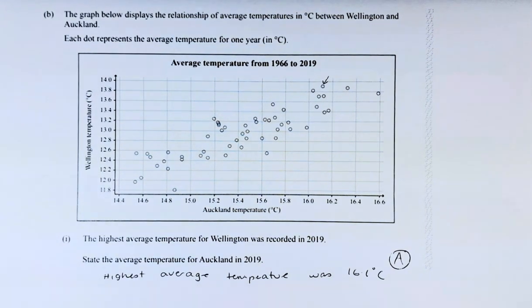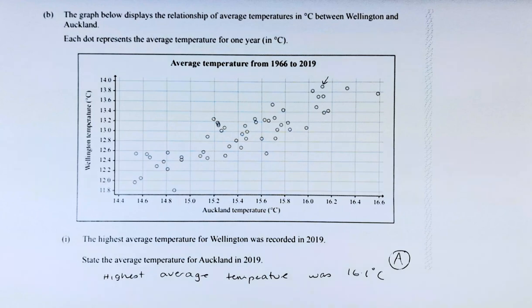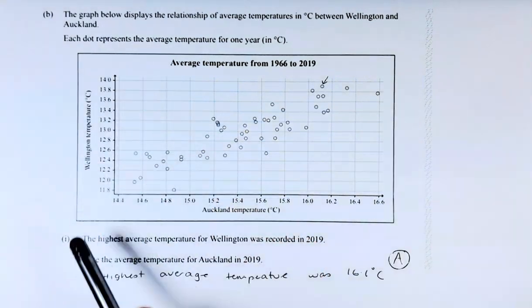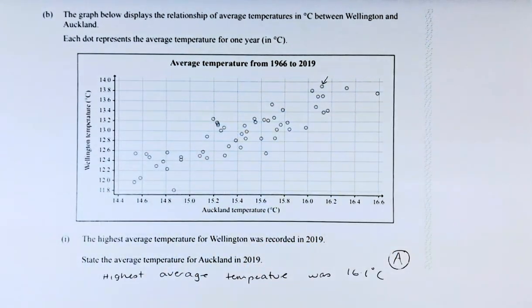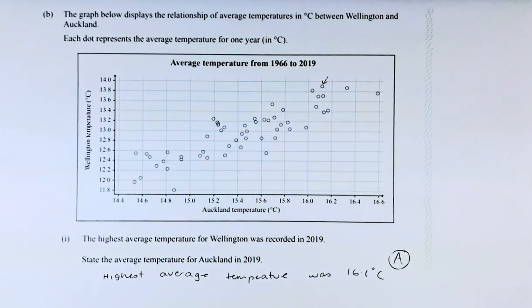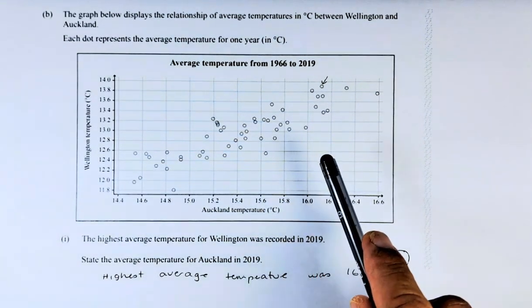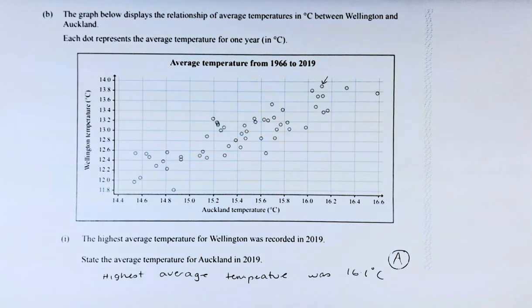The graph below displays the relationship of the average temperatures in degrees centigrade between Wellington and Auckland. You can see Auckland at the bottom and Wellington at the top and this is the scatter graph. Each dot represents the average temperature for one year. So in this case, we have 1966 to 2019, they are altogether 54 years.